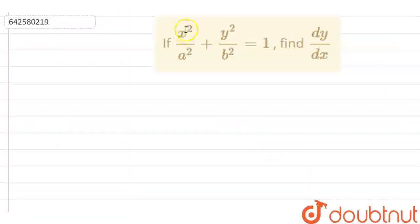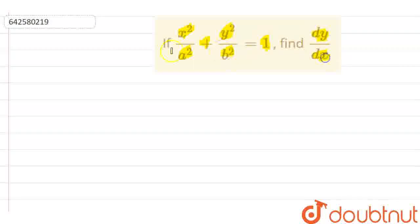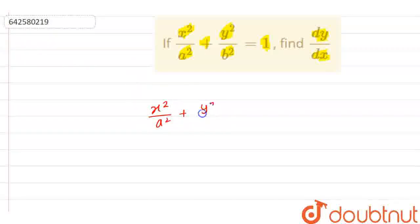Here the question is: if x squared by a squared plus y squared by b squared is equal to 1, find dy by dx. So now let's first write this as we are having x squared by a squared plus y squared by b squared is equal to 1.